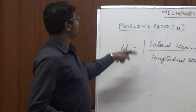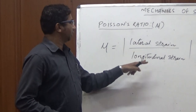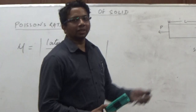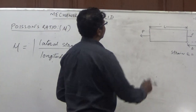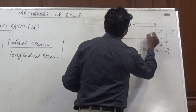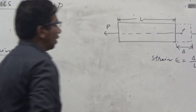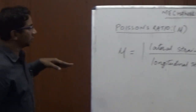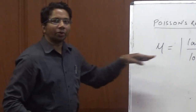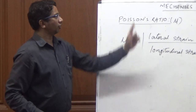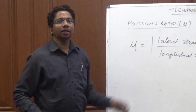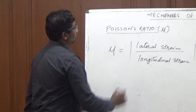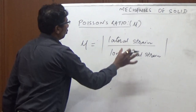So, Poisson's ratio is the ratio of the lateral strain upon the longitudinal strain. We assume a given direction along the width as the longitudinal direction. For example, the direction along the length is the longitudinal axis, and perpendicular to this — say in the vertical axis or perpendicular to this board — is the lateral direction. So, Poisson's ratio is the lateral strain upon the longitudinal strain.